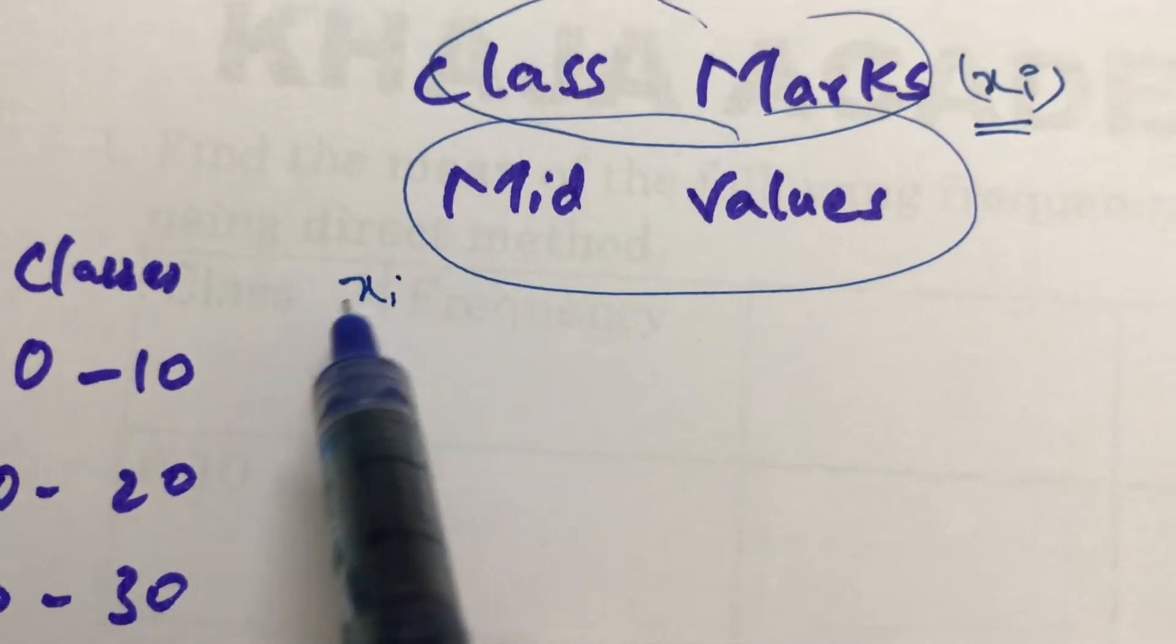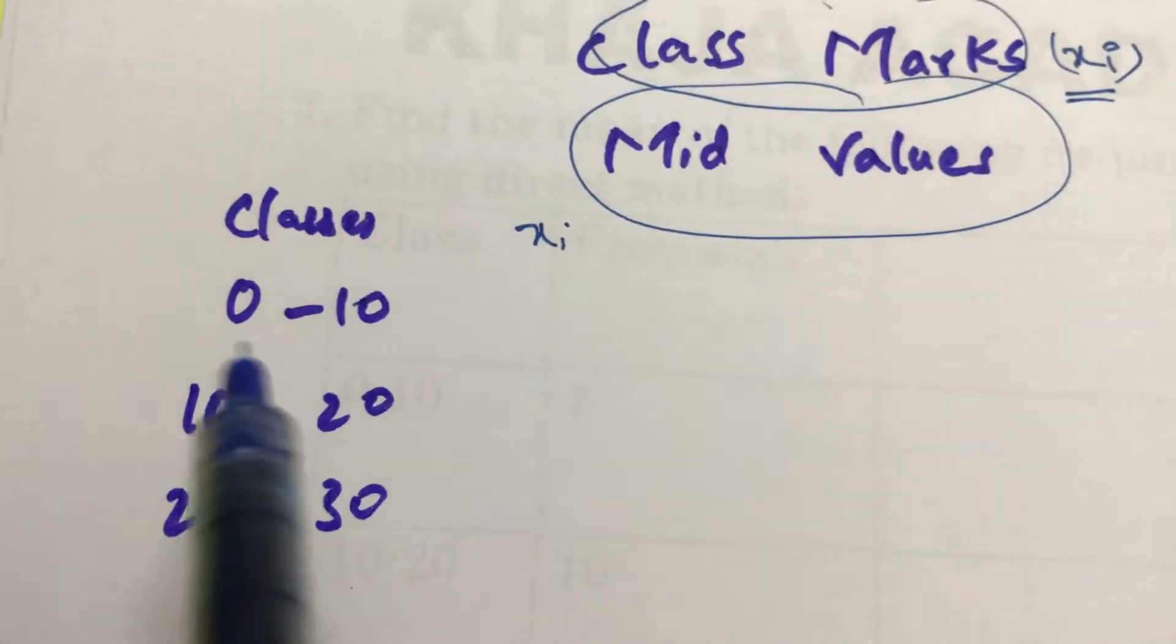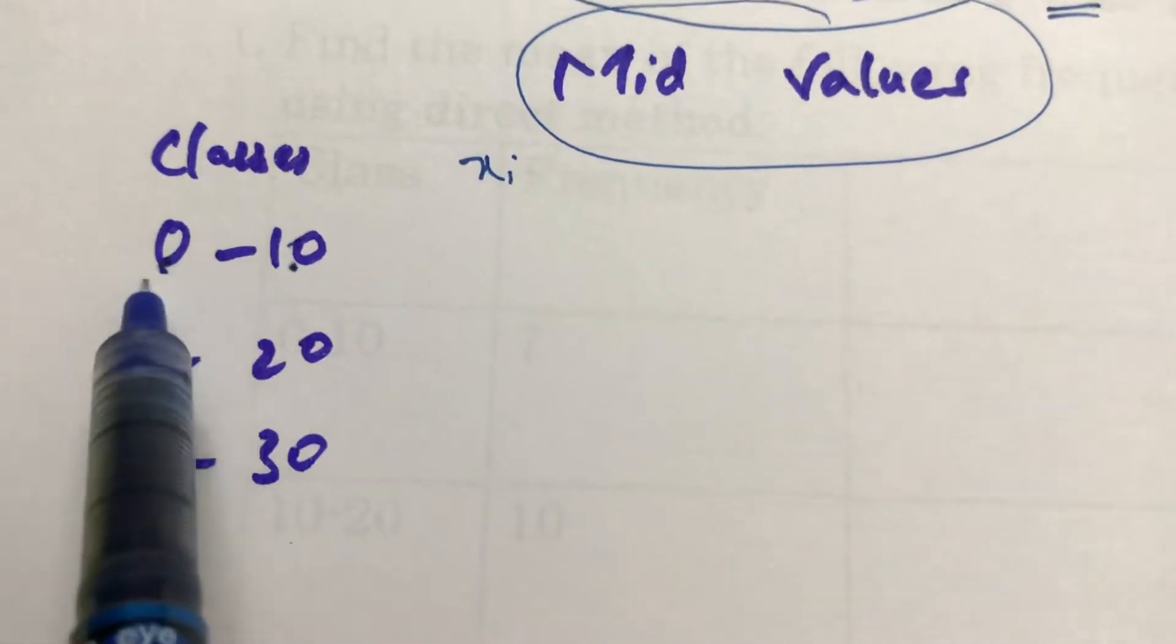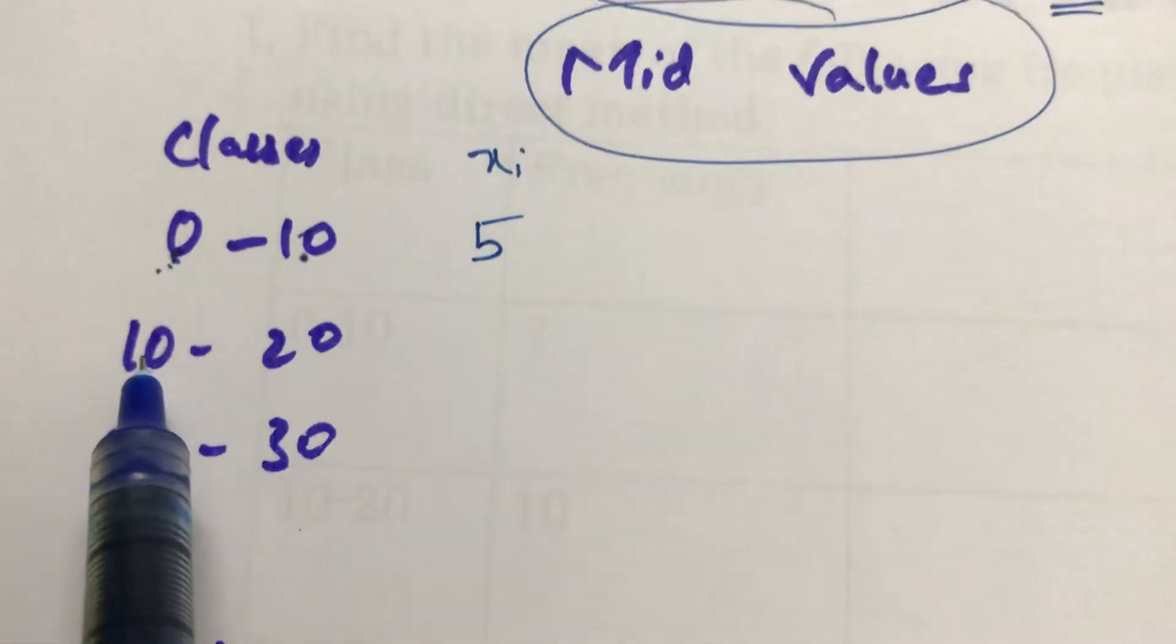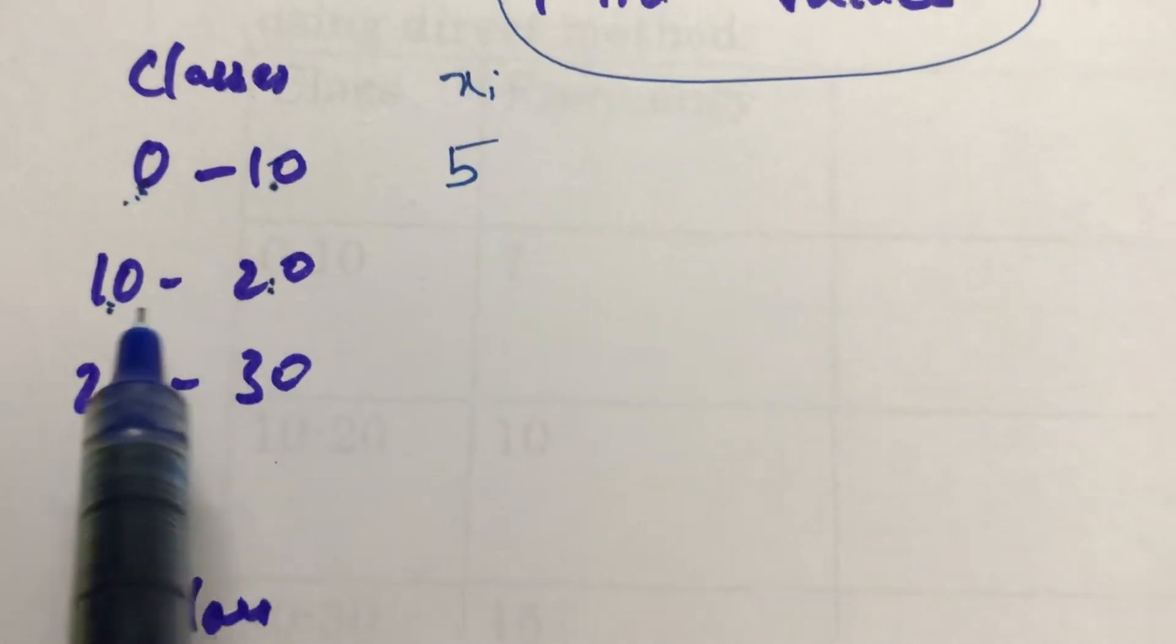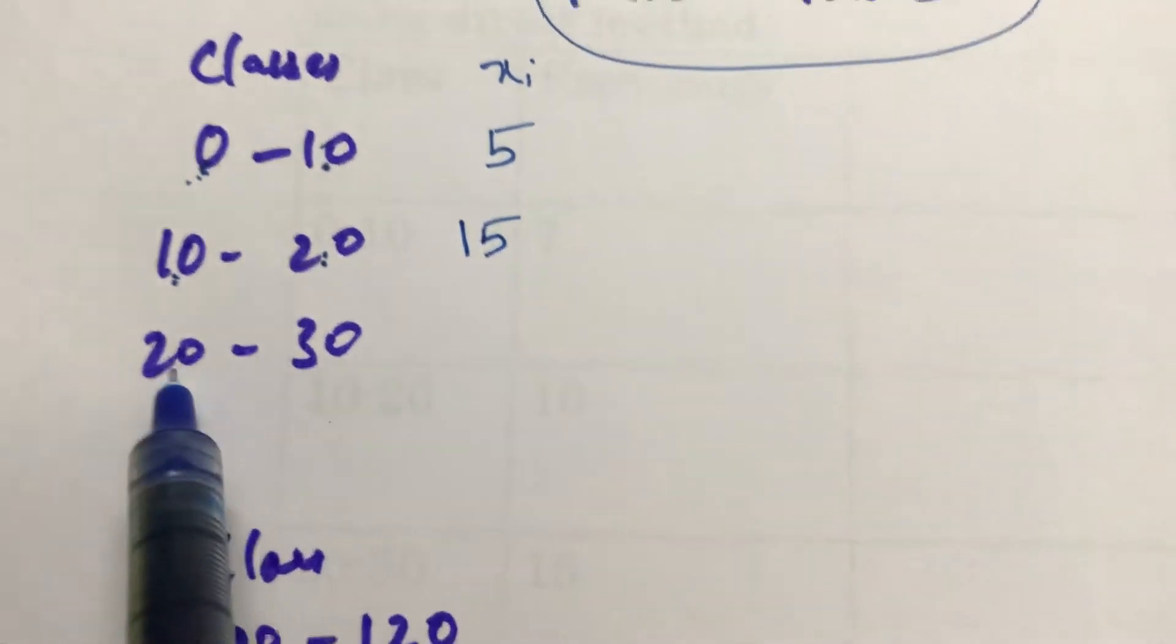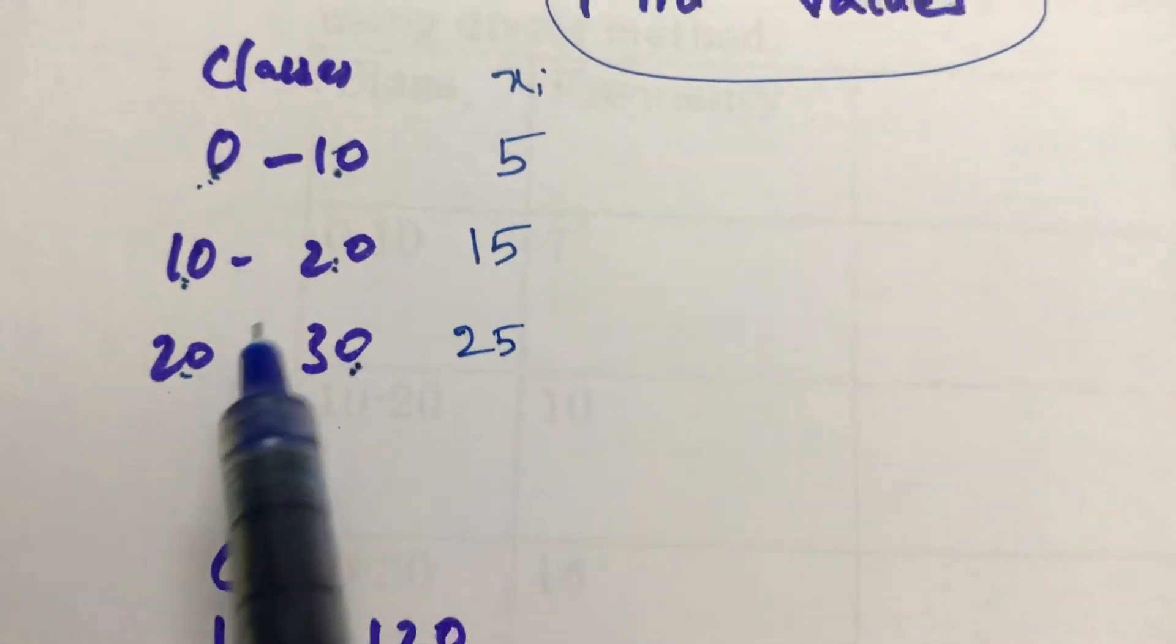Suppose these are the classes. We need to find the class mark. Class mark is nothing but mid value. We should add both lower limit and upper limit. Add 0 plus 10, that is 10. Half of 10 is 5. Add 10 plus 20, that is 30. Half of 30 is 15. 20 plus 30 is 50. Half of 50 is 25.